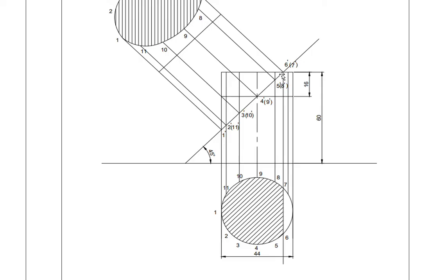After marking these points, drop points 6-dash and 7-dash to the baseline — like this, 6 and 7. This entire portion is the removed portion. The section plane removes this triangular portion, so in the front view this triangular portion is removed. In the top view, the portion left of this straight line should be hatched at an angle of 45 degrees.